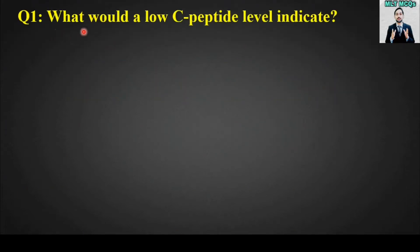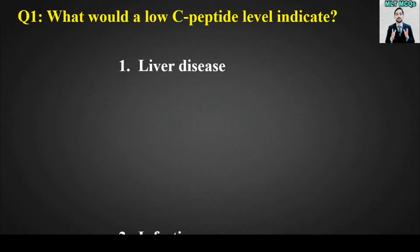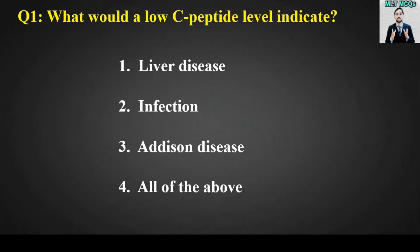MCQ number one: What would a low C-peptide test level indicate? Options are: liver disease, infection, Addison's disease, or all of the above. The right answer is option number four — a low C-peptide level indicates liver disease, infection, as well as Addison's disease.